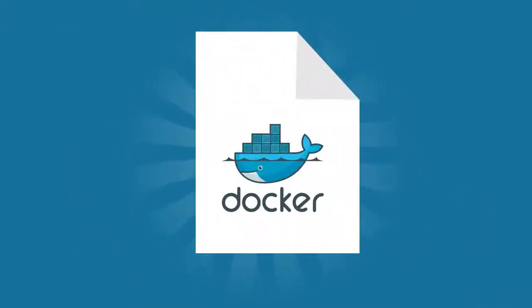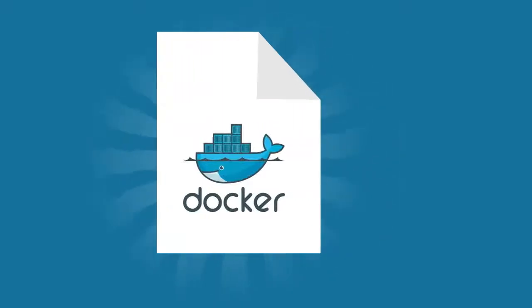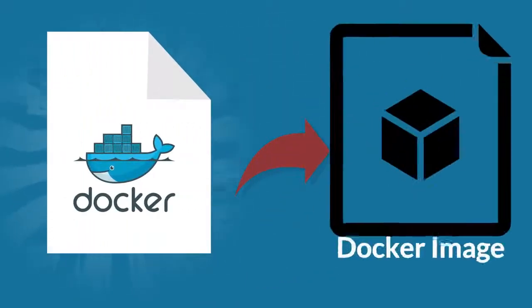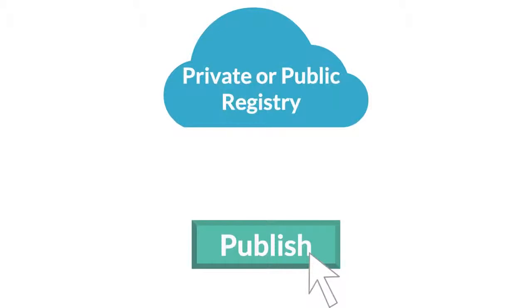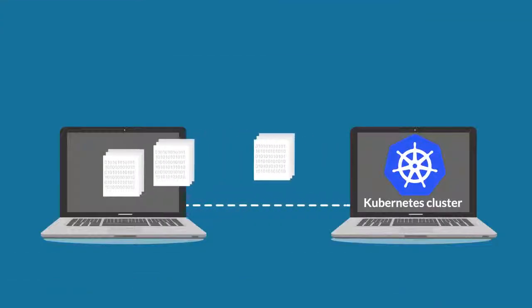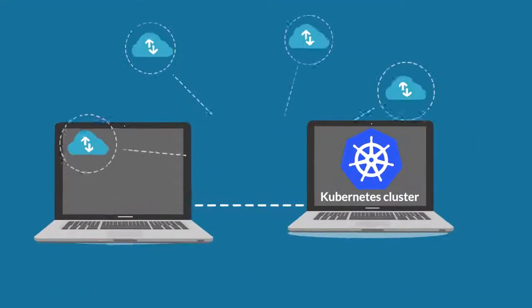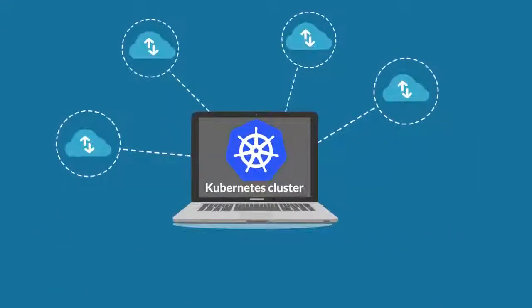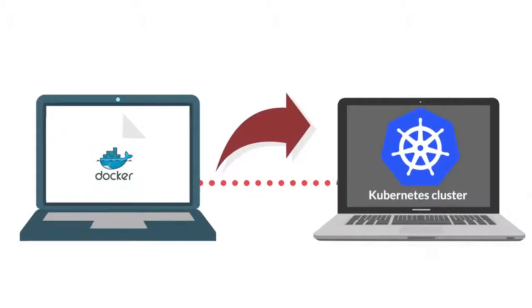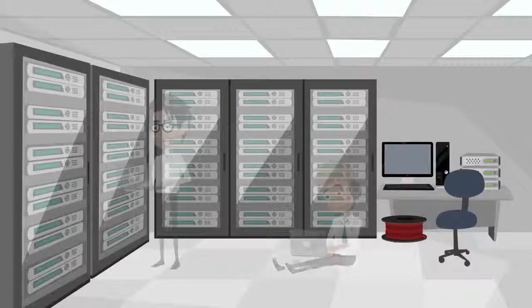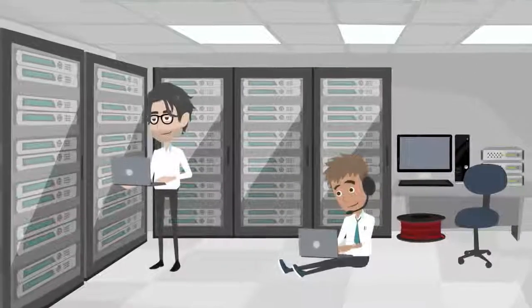These services are then transformed by generating Docker files. These Docker files are then used to create a Docker image, which can be published on a private or public registry, and can later be deployed on a Kubernetes cluster to the cloud of your choice. Application blueprints can be created to rewire the Docker images and deployed on a cluster. In addition, we also monitor these applications and clusters.